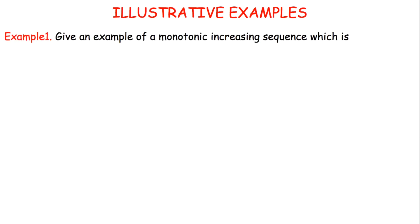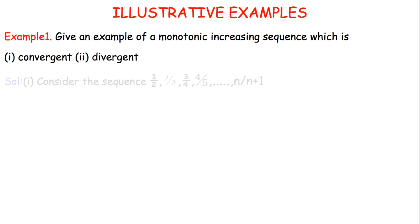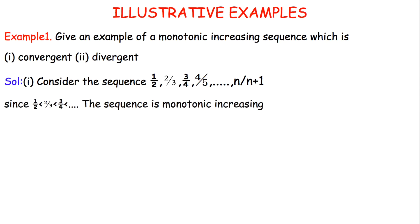Give an example of a monotonic increasing sequence which is convergent and which is divergent. In the first part, let's look at the convergence. So let's consider the sequence 1, 2...